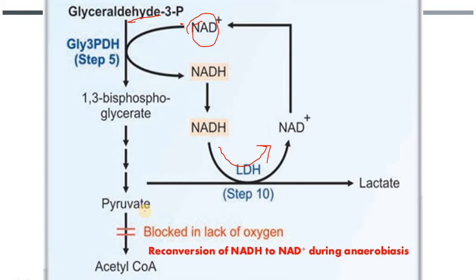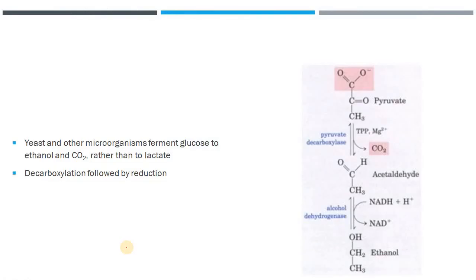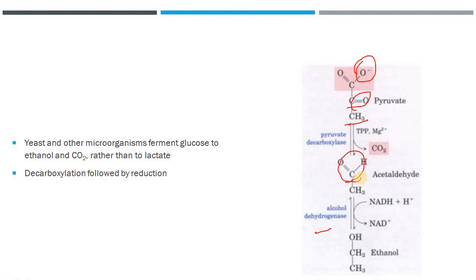Pyruvate normally enters the citric acid cycle, but is blocked during anaerobic conditions. In microorganisms such as yeast, fungi, and bacteria, under anaerobic conditions they don't produce lactate but instead produce ethanol. Glycolysis ends with pyruvate production, and the enzyme pyruvate decarboxylase removes CO2 — converting the acid group to an aldehyde — resulting in the formation of acetaldehyde.